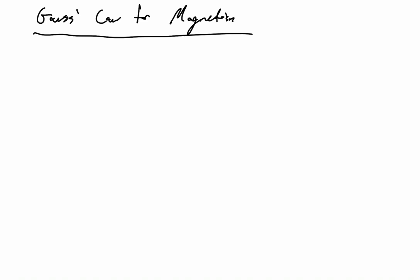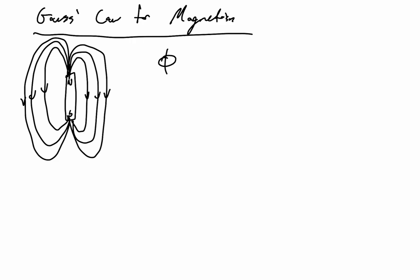Now let's talk about Gauss's law for magnetism — Maxwell's second equation, Gauss's law for magnetic flux. Let's examine a similar situation, but instead of a charged particle, let's examine a bar magnet with a North pole and a South pole. Our magnetic field lines are going to behave very similar to our electric field lines — going out of the North pole and into the South pole. Placing our closed surface in the field, the lines pointing in exactly balance the lines pointing out, so phi_b equals zero.